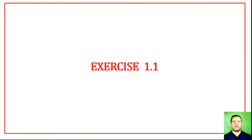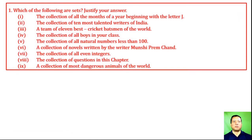Exercise 1.1, Question 1: Which of the following are sets? Justify your answer. (i) The collection of all months of a year beginning with the letter J.